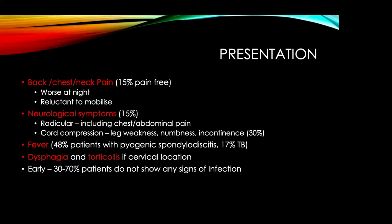Presentation can be non-specific. Somewhere between 85 and 90 percent will have some kind of axial pain — whether back, chest, or neck pain. Chest pain can be cardiac, pulmonary, or upper GI. Typically the pain is unremitting and worse at night, and patients are reluctant to mobilize. About 15 percent will have neurological symptoms including radicular pain, chest and abdominal pain, or cord compression symptoms such as leg weakness, numbness, and incontinence. About half of patients with pyogenic spondylodiscitis will have a fever, but only about 17 percent in TB.